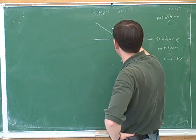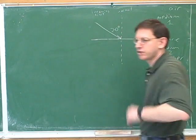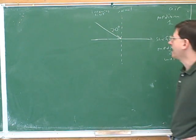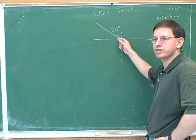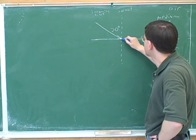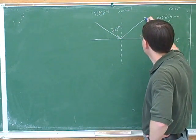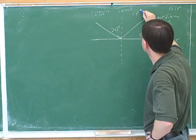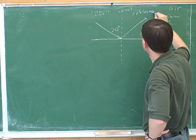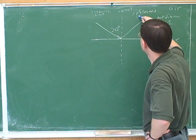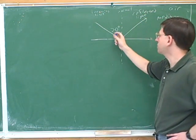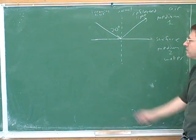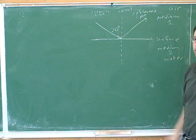Let's say this incoming light is coming in at a 20-degree angle — so this isn't drawn to scale. Some of the light is going to be reflected from the surface and bounce off like this. We would call this the outgoing reflected light. We would call this 20 degrees the angle of incidence — the angle that the incoming light makes with the normal.